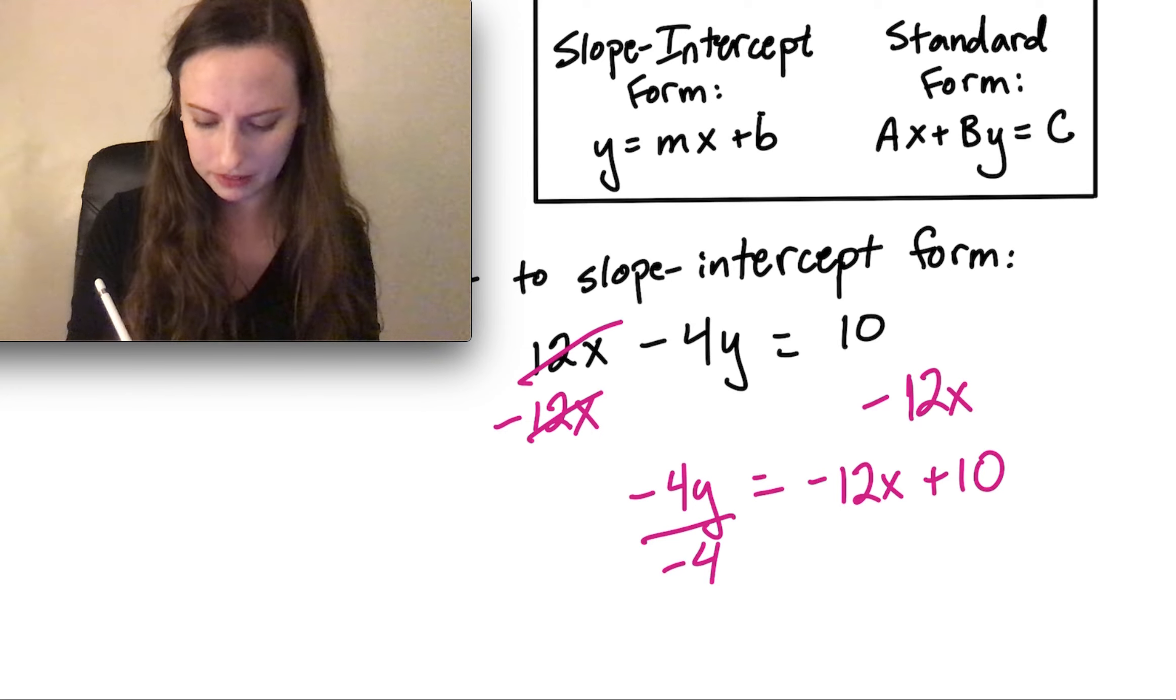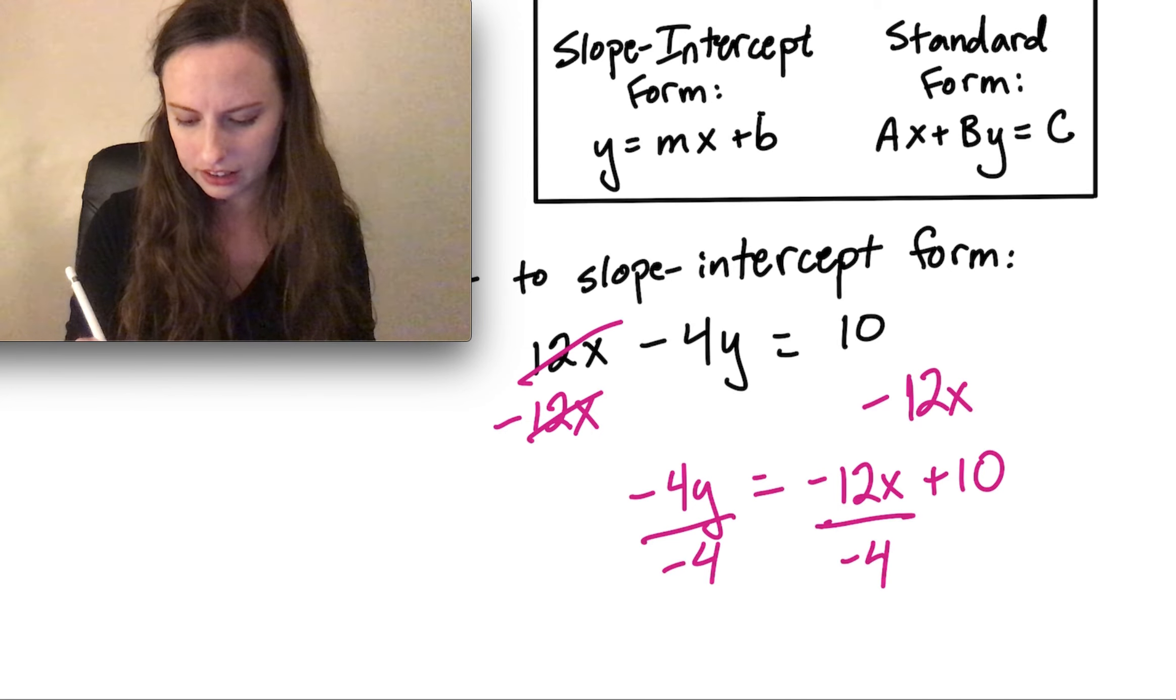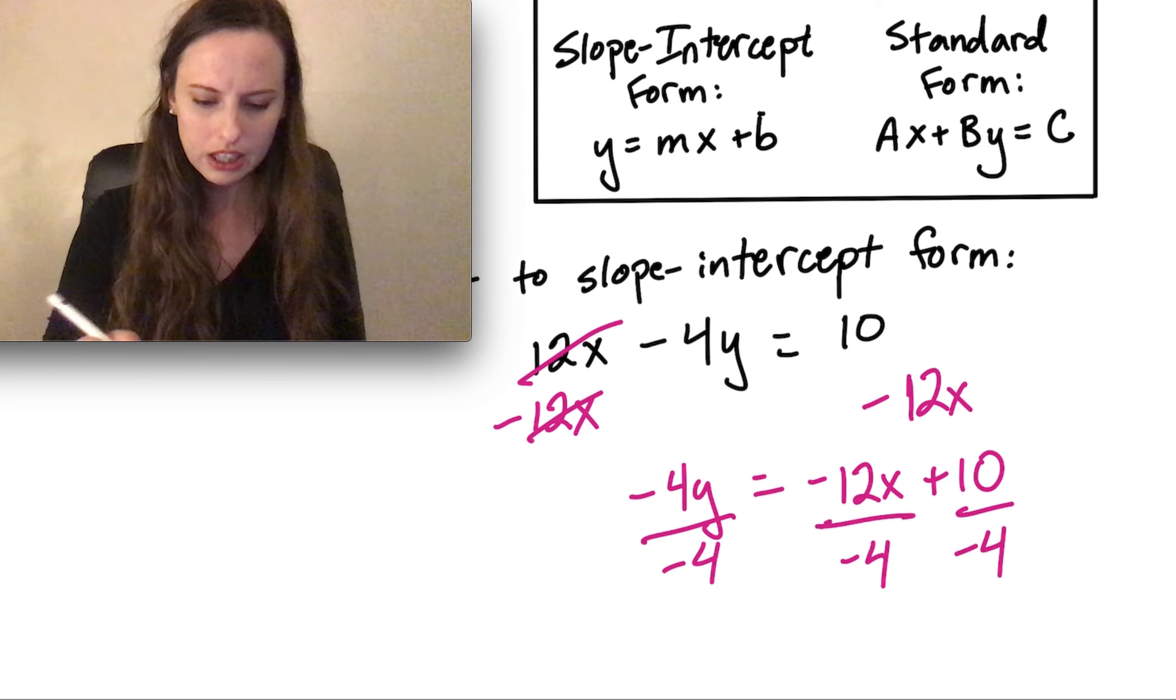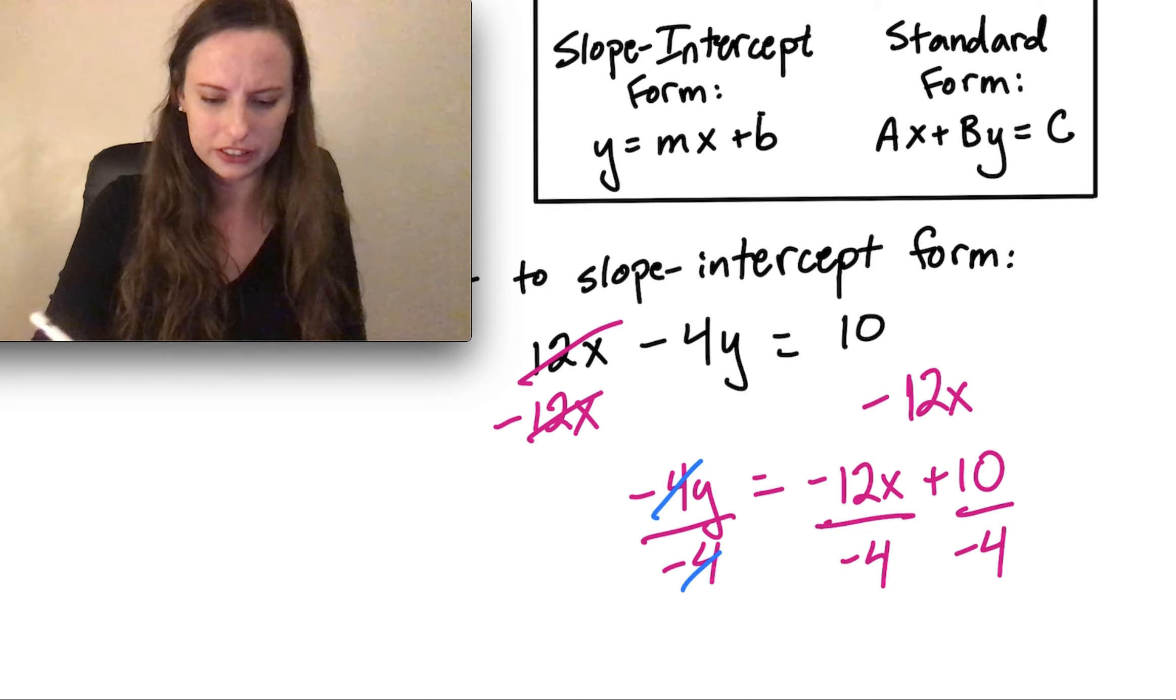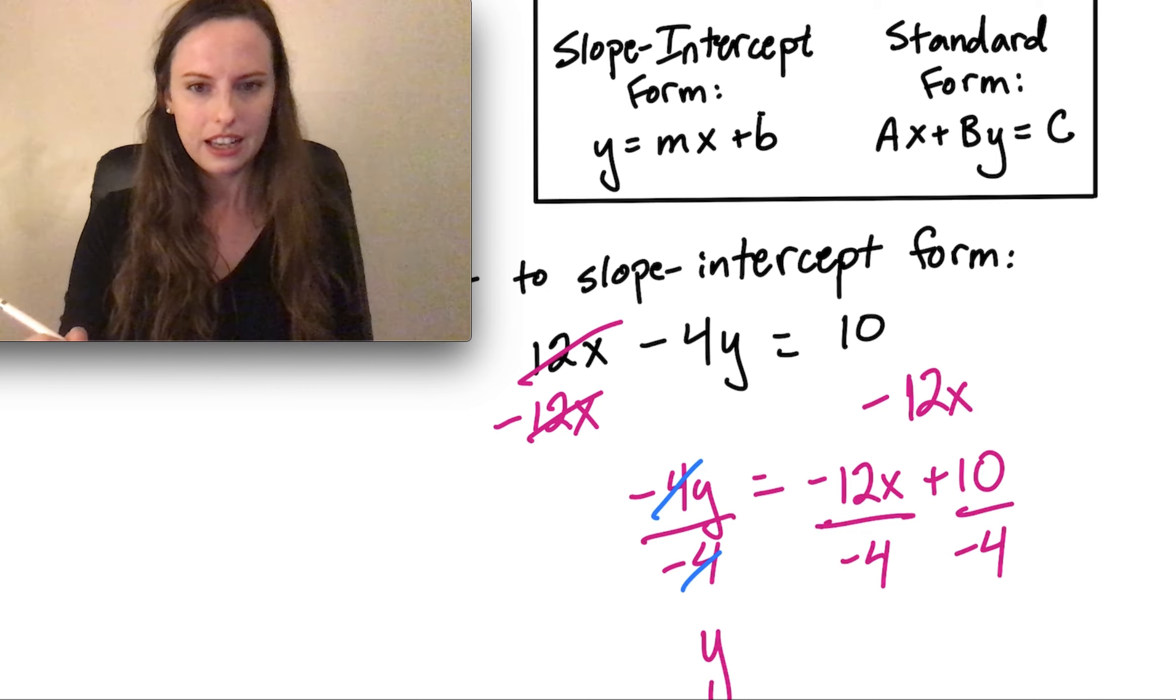Now we want to get that y by itself by dividing both sides by negative 4. I'm going to divide every term by negative 4. Over here, those 4s will cancel out, leaving me with just the y.